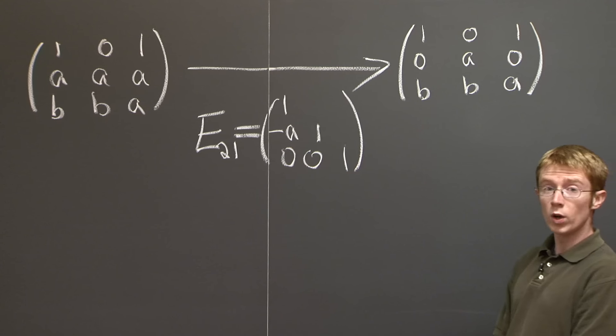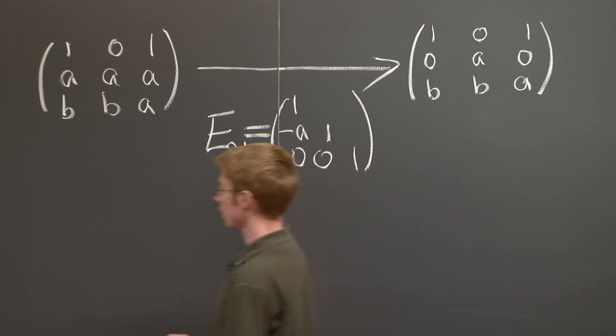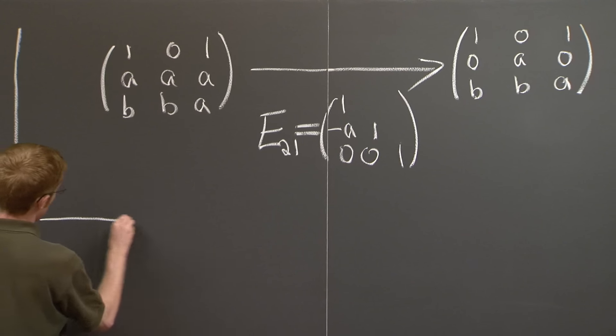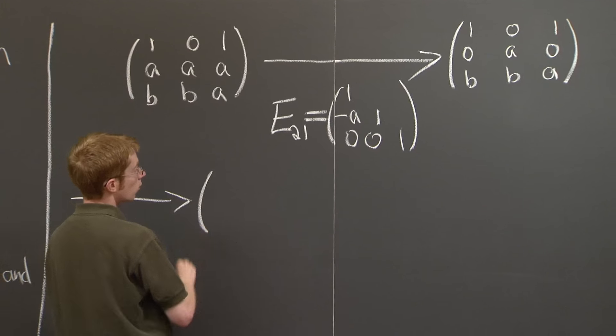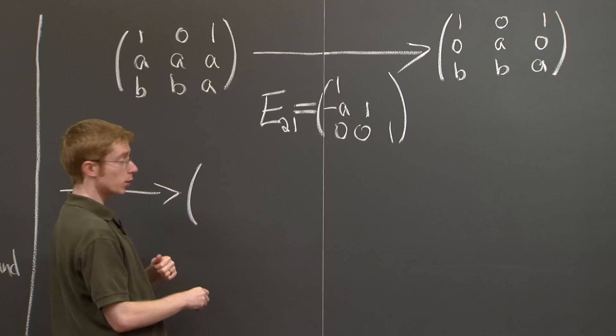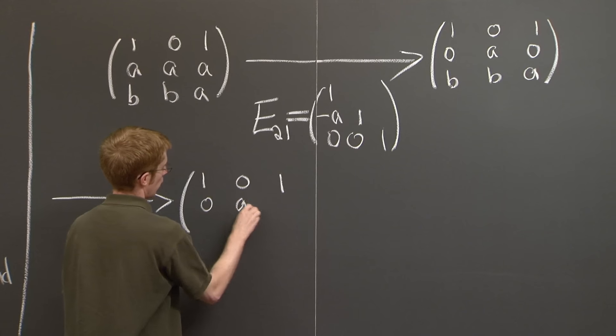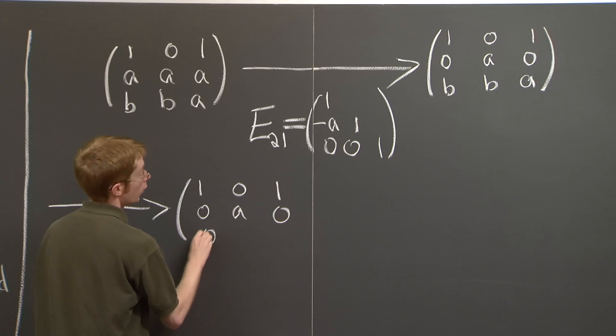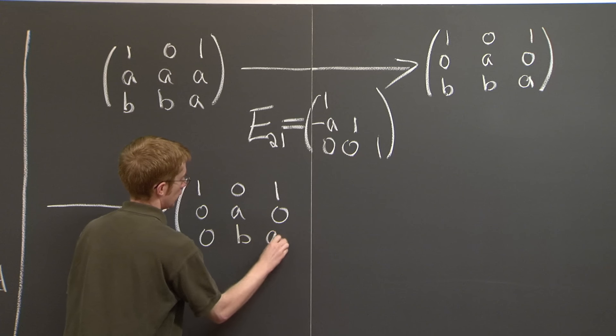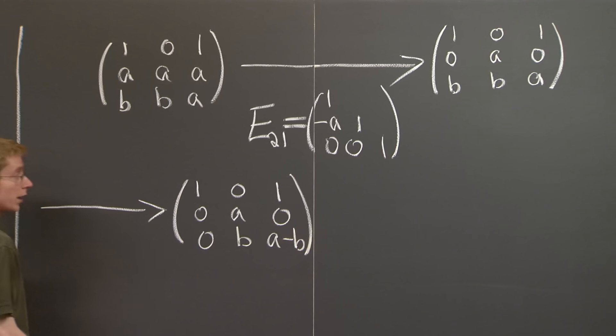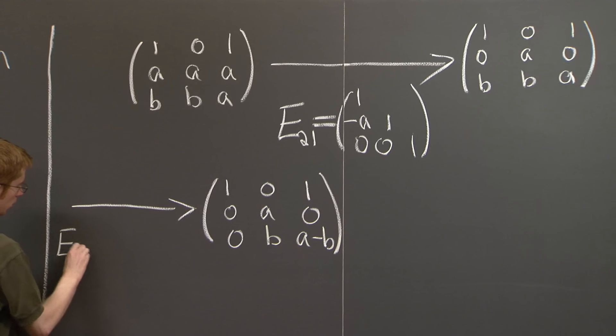Now, which entry should we eliminate next? We need to eliminate this b. So we will replace the third row by the third row minus b times the first row. And which elimination matrix did we use?